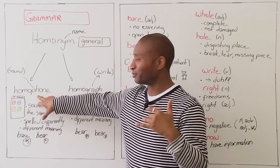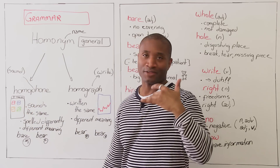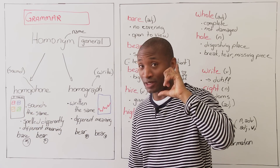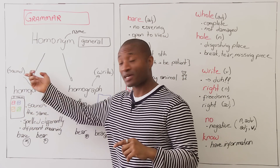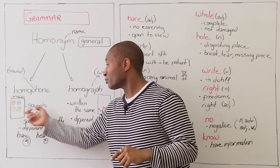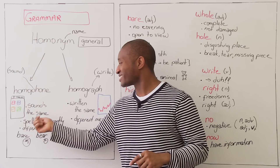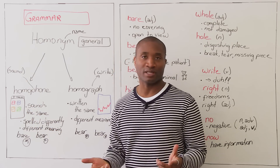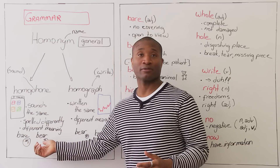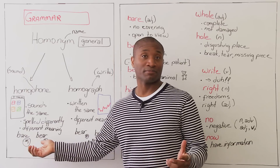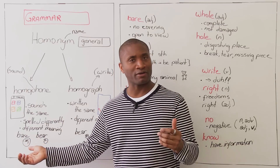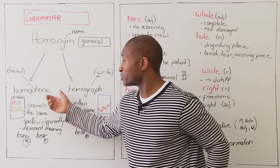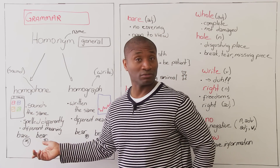Homophone — think of your iPhone. Phone is for sound, because we have phonics, sound. So a homophone sounds the same, but it's spelled differently and has a different meaning. Bear and bare, right? In the story earlier, we talked about 'bear,' and it didn't look quite right. Because I was using a homophone.